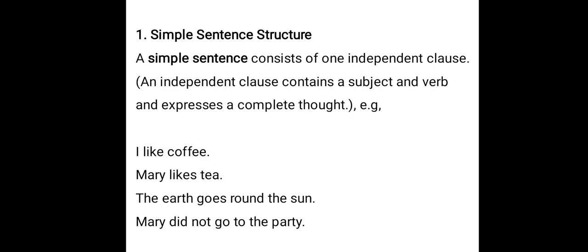This is why clauses have two types: a dependent clause and an independent clause. A dependent clause doesn't express a complete thought and cannot stand alone. An independent clause can stand alone — we can say it is a simple sentence. A simple sentence consists of one independent clause, which contains a subject and a verb and expresses a complete thought. Examples: I like coffee. Mary likes tea. The earth goes round the sun. Mary did not go to the party.